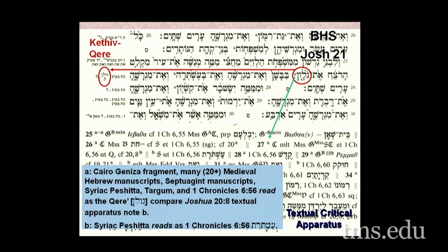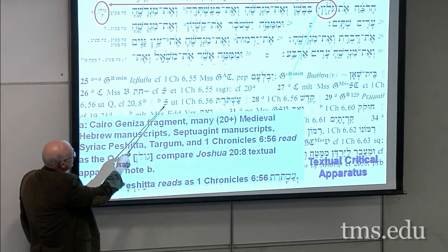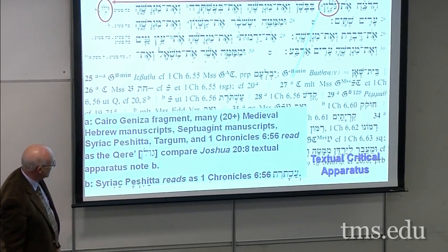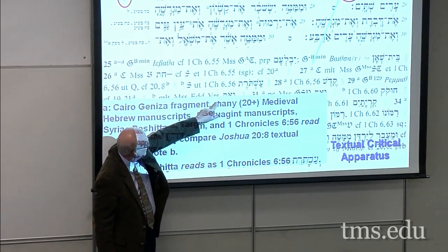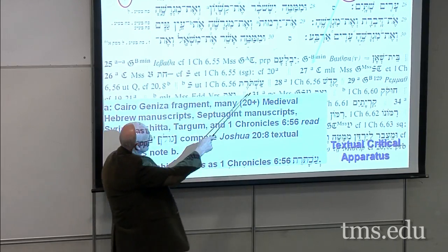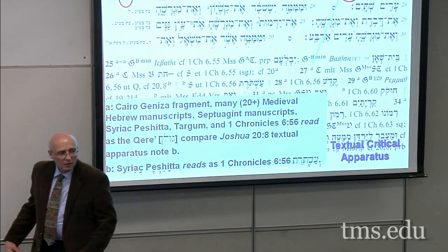Going back to this — when we go down to the next textual apparatus note, which is the B, that superscript B is attached up here in the verse we're working on. We come down and find that B right here — that's the Syriac Peshitta symbol, the Gothic S. 'Ut' is Latin meaning 'as.' So the Syriac Peshitta reads as or reads like 1 Chronicles chapter 6, verse 56. This is what it reads: Ashtoret. Notice here all I put in was the Hebrew — I did not translate it. Just supplied it. It tells you what the reading is.